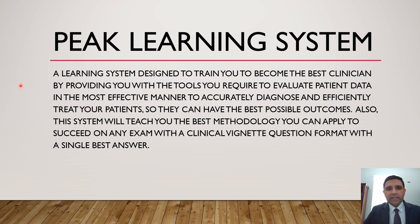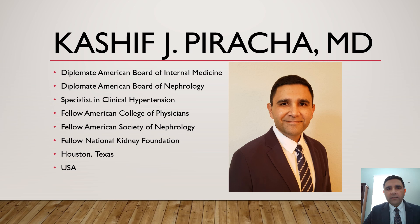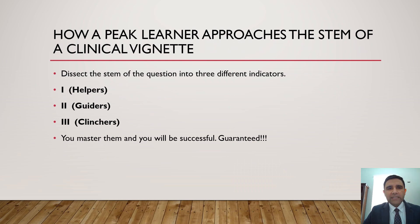The first slide is the Peak Learning System that I've devised. The second slide is an introduction about me. The third slide shows how a peak learner approaches the stem of a clinical vignette. I've divided the stem into three parts: helpers, guiders, and clinchers. We already talked about helpers in our previous video. We're going to do a brief overview of helpers in this video too, but this video is primarily about the guiders.